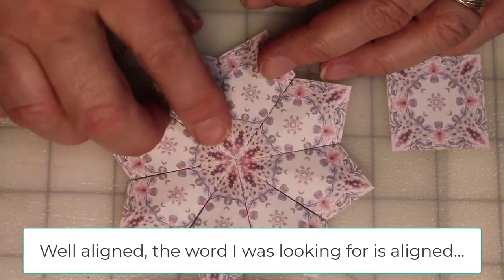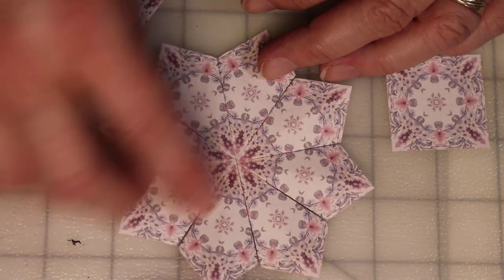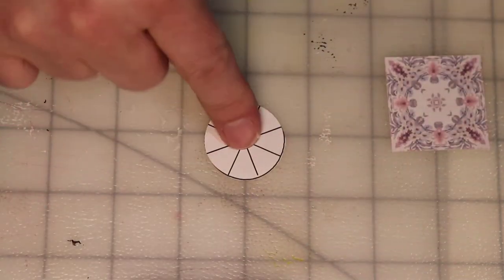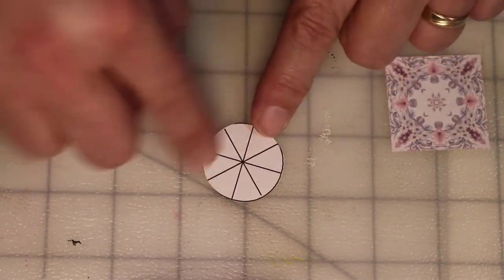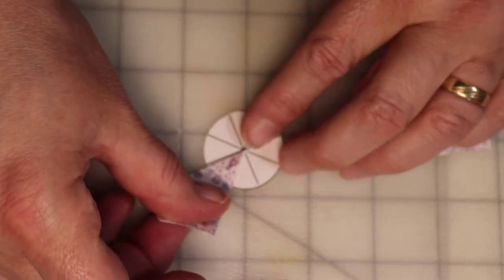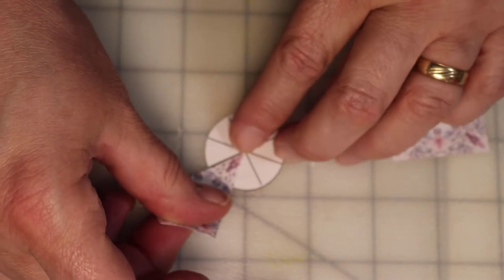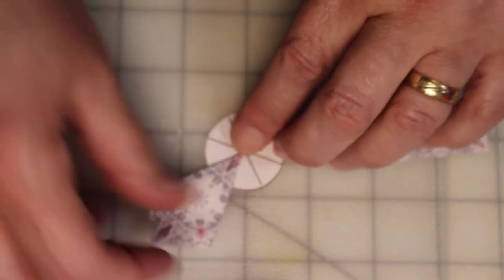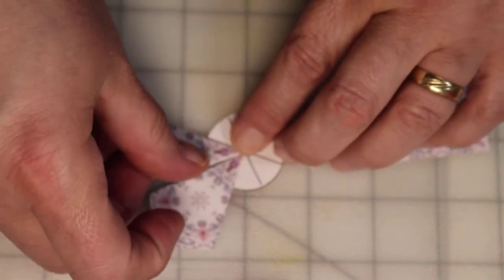Especially starting out, that's kind of a hard thing to do is get those lined up really well. So what I do is I put it down, I'll put glue on the template, and then I will put each tile in just so it lines up and so the point is right at the middle. So stick them down like that.